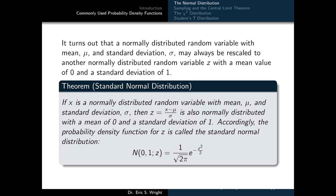A normally distributed random variable with a mean mu and a standard deviation sigma may always be rescaled to another normally distributed random variable z with a mean value of 0 and a standard deviation of exactly 1. If x is a normally distributed random variable with mean mu and standard deviation sigma, then z equals the quantity x minus the mean divided by the standard deviation is also normally distributed, but with a mean of 0 and a standard deviation of 1. The probability density function for this variable z is called the standard normal distribution, with mean and standard deviation parameters set exactly to 0 and 1.